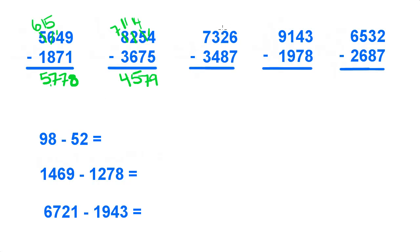Over here we have 6 minus 7, borrow from the 2, make that a 1, make that a 16. That's going to be 9. 16 minus 7 is 9. So borrow from the 3, make that a 2, make that 11. So 11 minus 8 is 3.